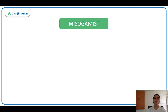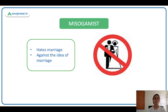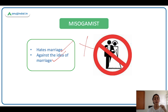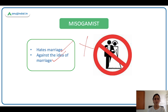Next is misogamist. A misogamist is someone who hates marriage and is against the idea of marriage. For example, if your friend says 'I'm getting married, I proposed to my girlfriend and she said yes,' instead of congratulating them, a misogamist would say 'Why are you getting married? Are you crazy? Don't ruin your life — you're going to regret this.' Such people are called misogamists.